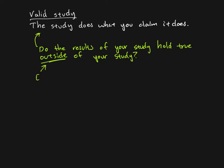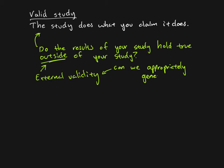This concept is called external validity. A study has external validity if we have good evidence and reasons for claiming that what happened in the study would also happen in general — in other cases, at other times, in other places. The key question is: can we appropriately generalize? By generalize, I mean we say this was true for our study, but it is also true in some broader sense — not always, but broader than just this one study.